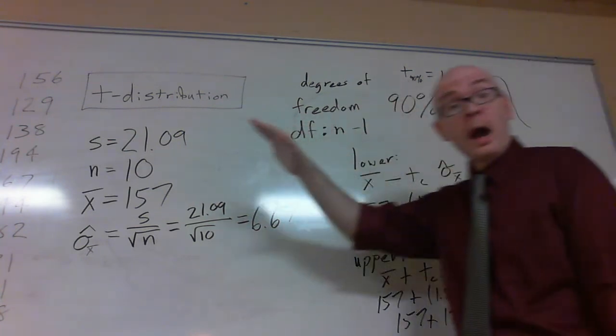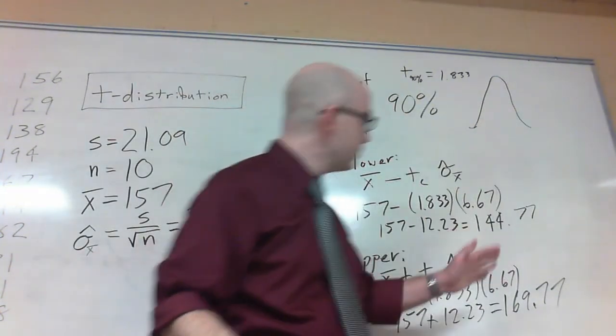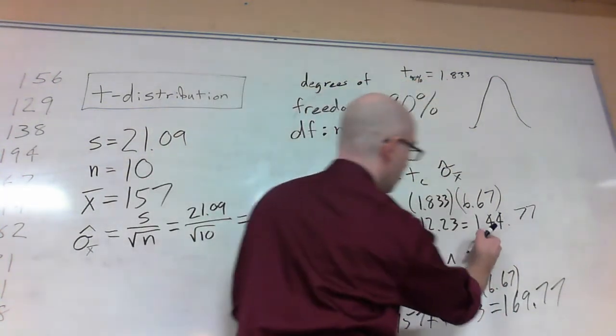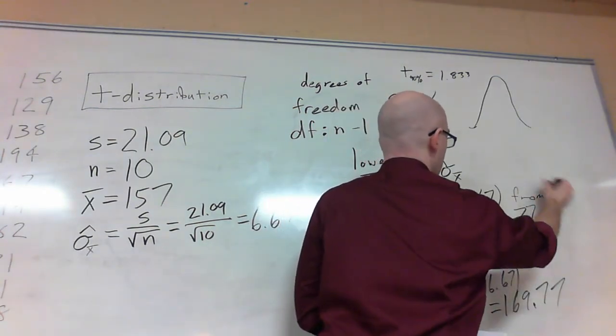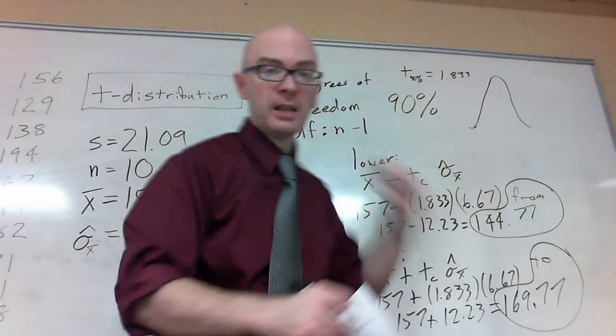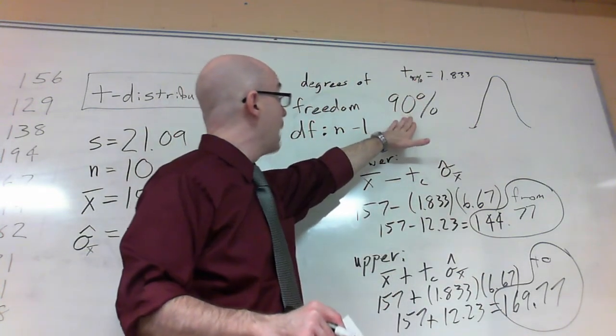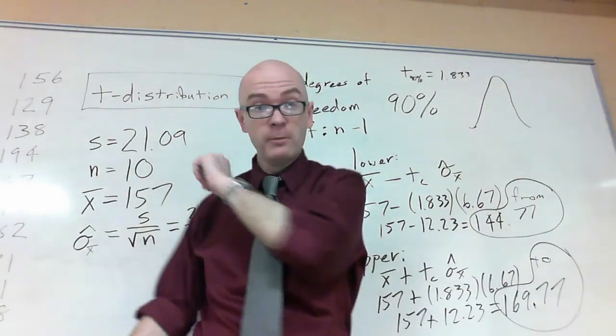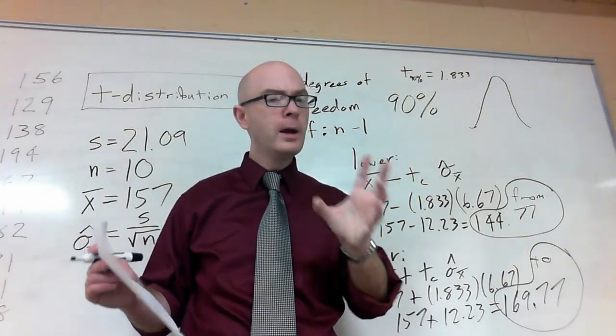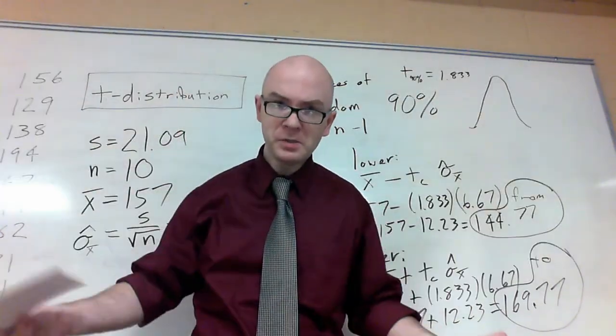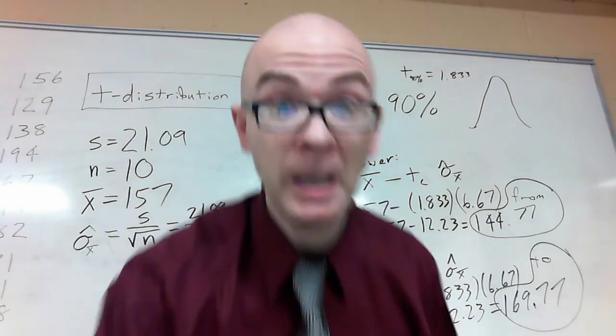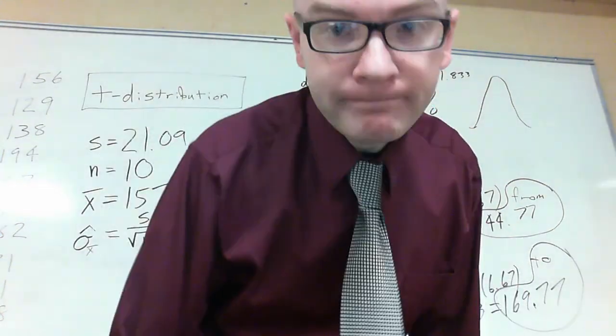So this is how we are able to determine about where our population mean would be. Our population mean would be from this 144.77 to 169.77. We've got a 90% level of confidence that our population mean of every household that this is a sample from is likely to be in. Not guaranteed, but we can get a pretty good idea where a lot of that data is going to be. Review this, bring in your questions, and we will be awesome. Ta-ta. See you soon.